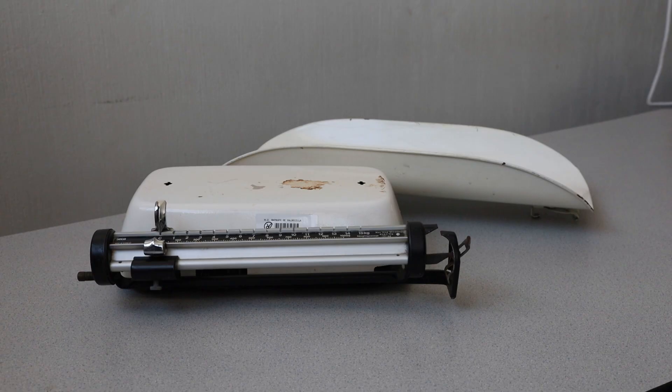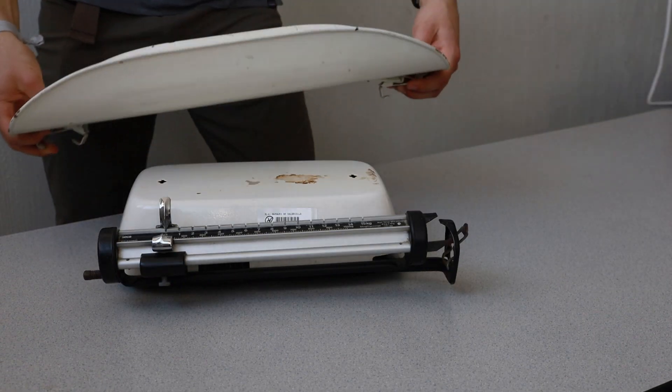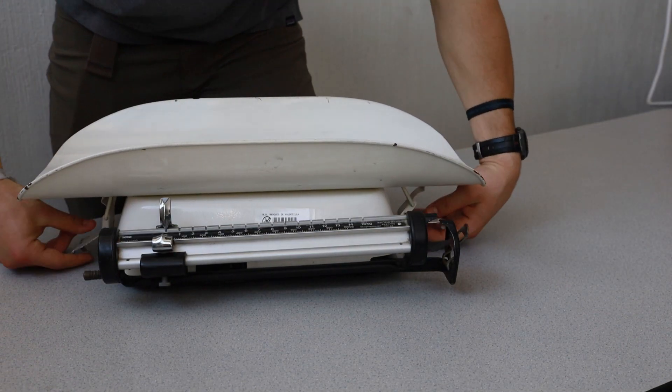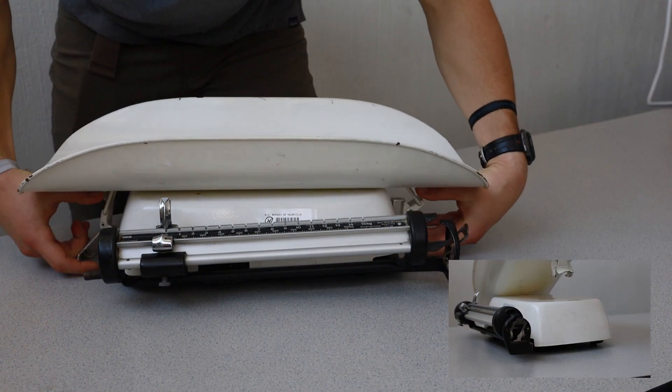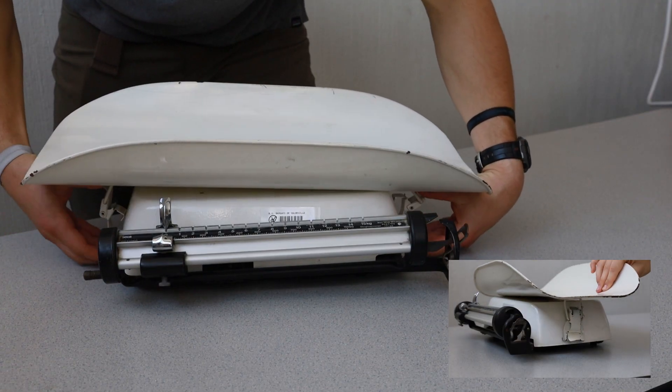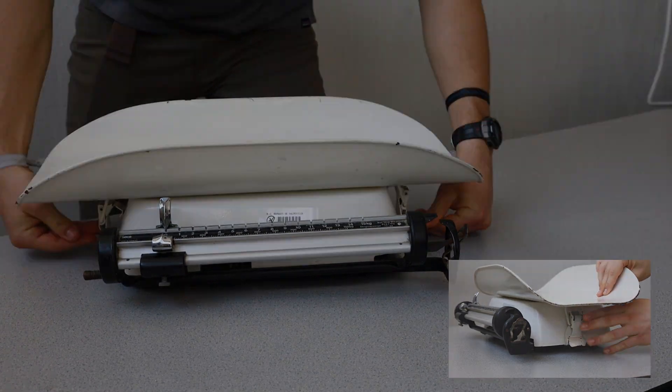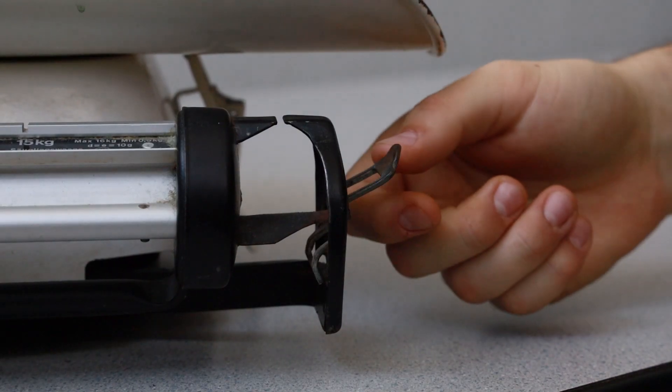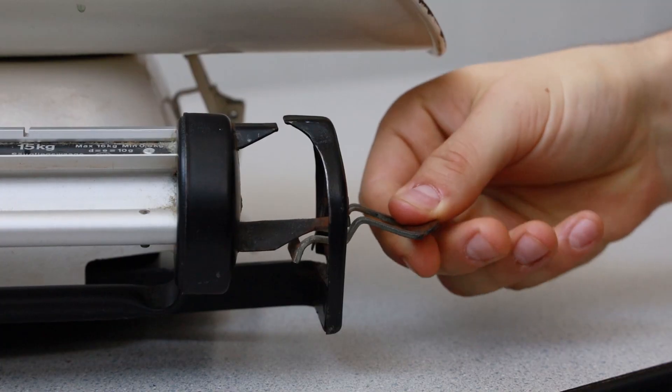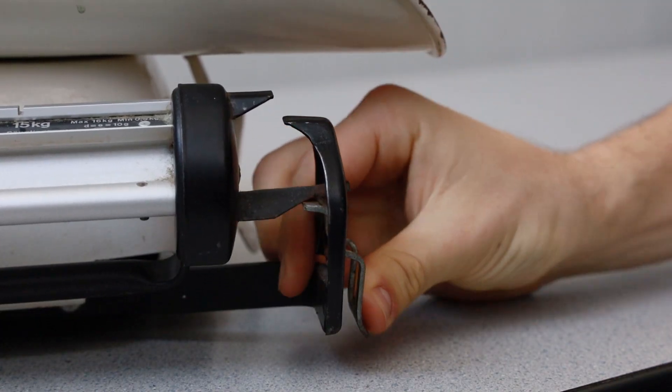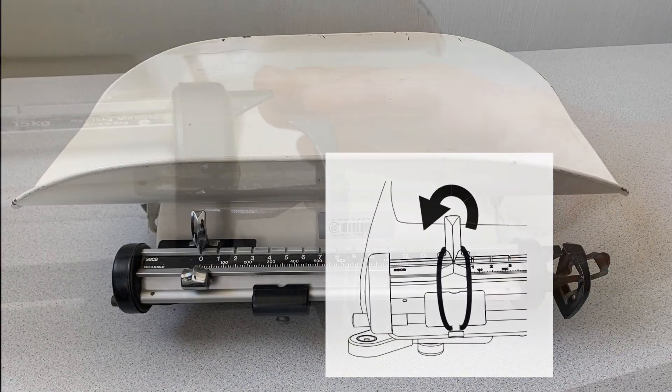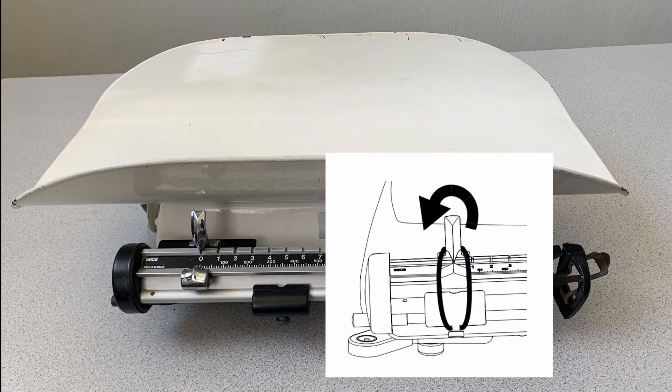To transport the scale as a single unit, ensure that the tray is securely attached to the bottom half of the scale system by locking the side latches in place. In addition, activate the transport lock to ensure the beam is not damaged during transport. Consider using a rubber band to lock the sliding weights to the tear weight during transportation to prevent damage or sliding of the weights.